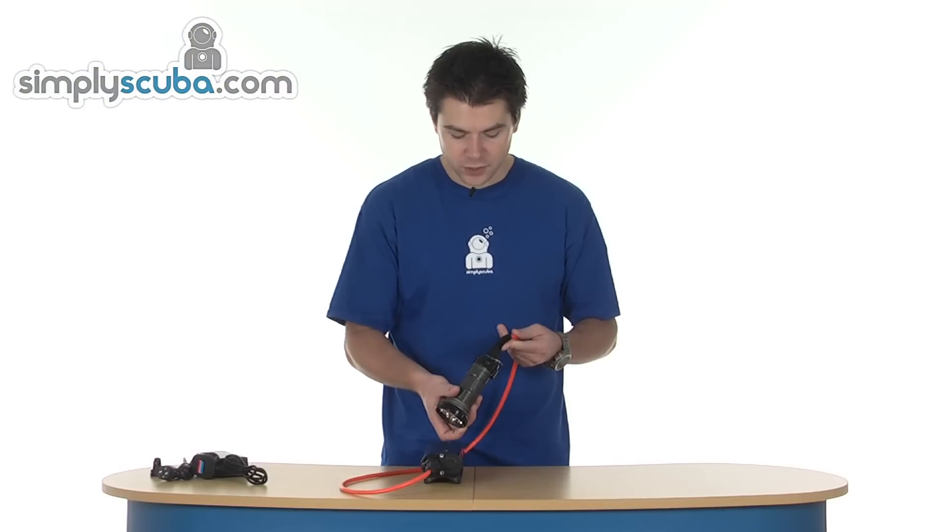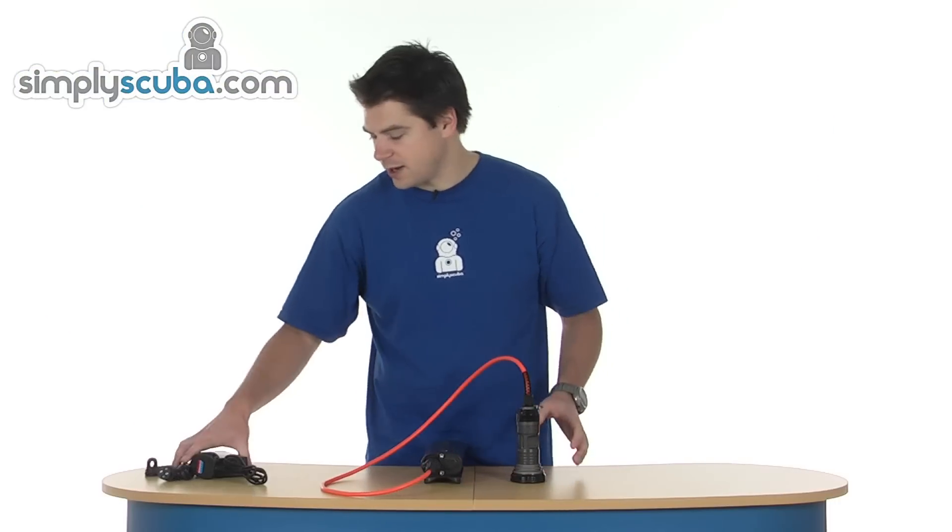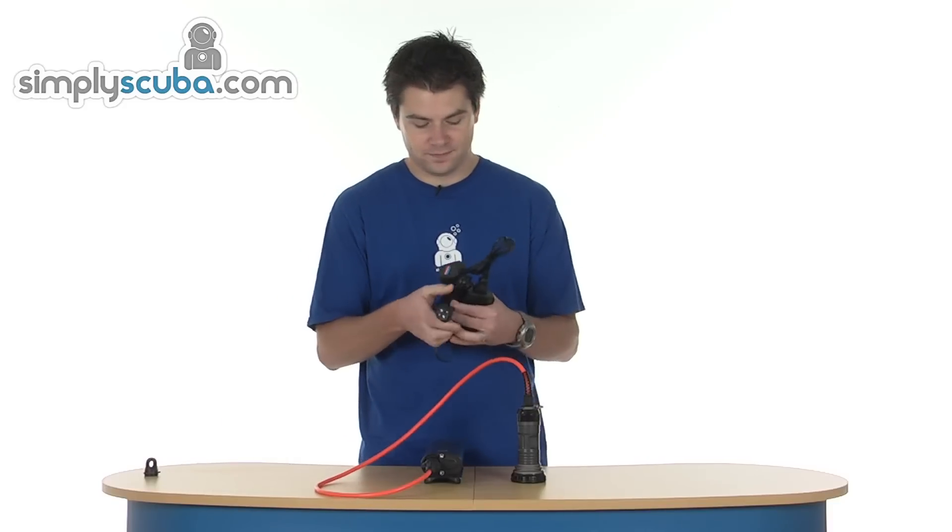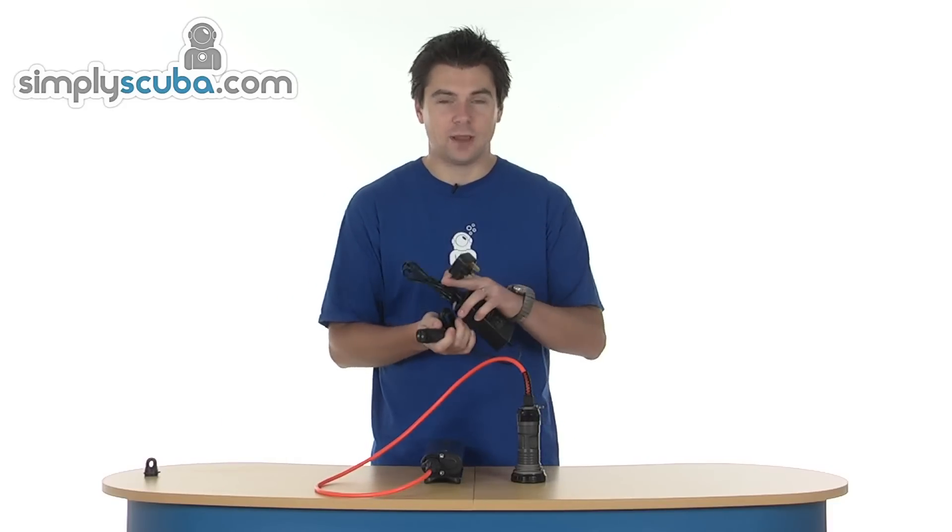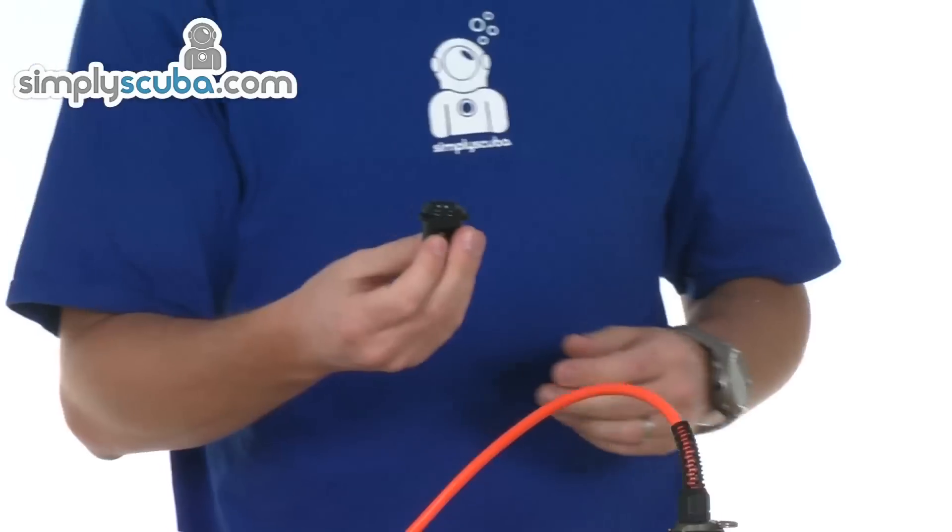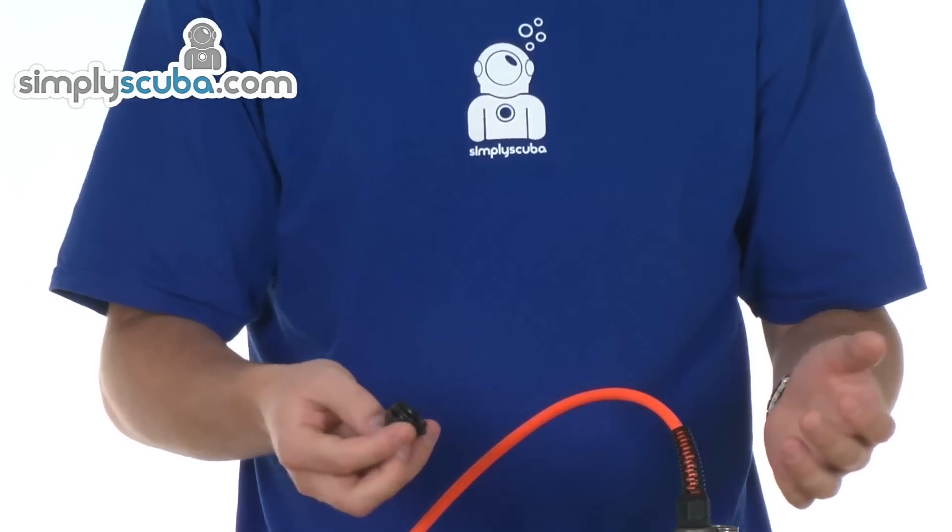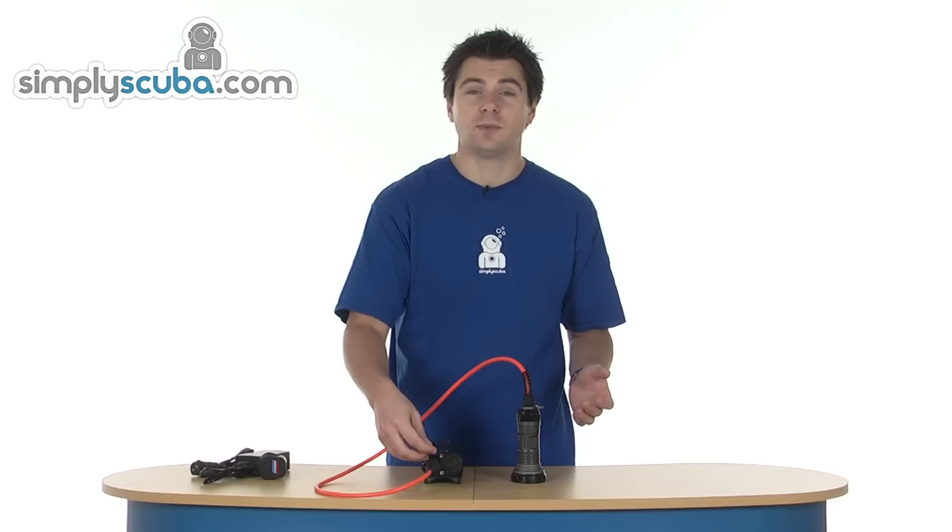So obviously it comes with all this, including the pack. You also get mains charger, UK mains, and also a battery cap as well, so when you take the umbilical cable off, you've obviously got a cap to put on the battery.